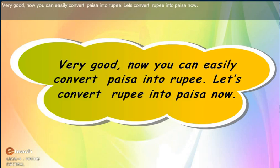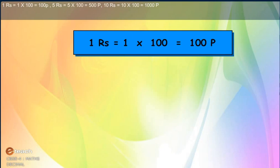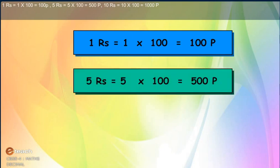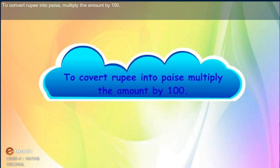Very good. Now you can easily convert paise into rupees. Let's convert rupees into paise now. 1 rupee equals 1 × 100, which is 100 paise. 5 rupees equals 5 × 100, which is 500 paise. 10 rupees equals 10 × 100, which is 1,000 paise. To convert rupees into paise, multiply the amount by 100.